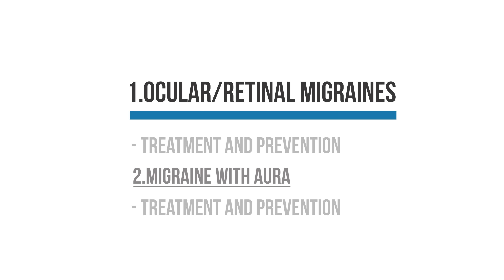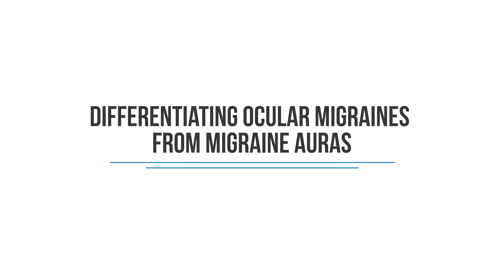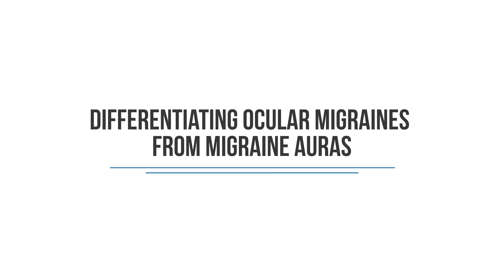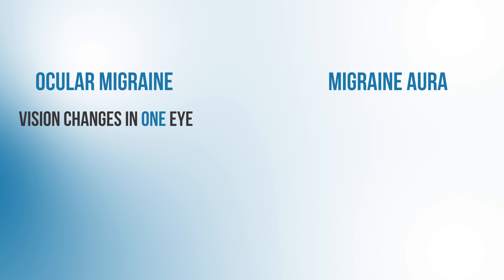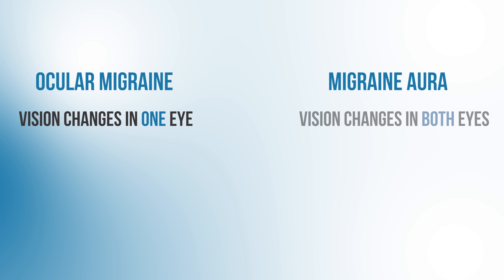It's essential to know that a migraine aura and an ocular migraine are not the same things. Ocular migraines can also be referred to as retinal migraines and are different than migraine with aura. The key differentiating factor is that ocular or retinal migraines cause visual symptoms in one eye, whereas migraine auras cause symptoms in both eyes.